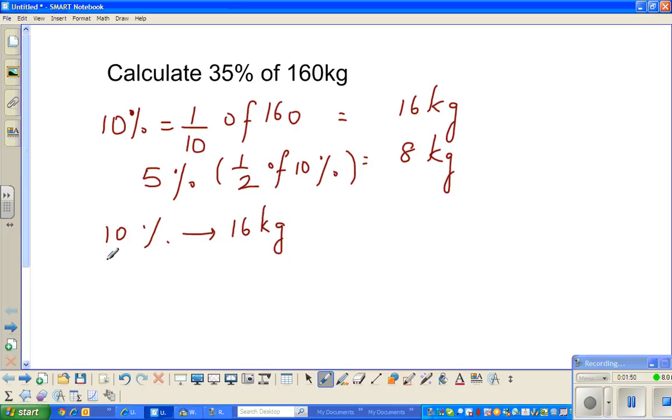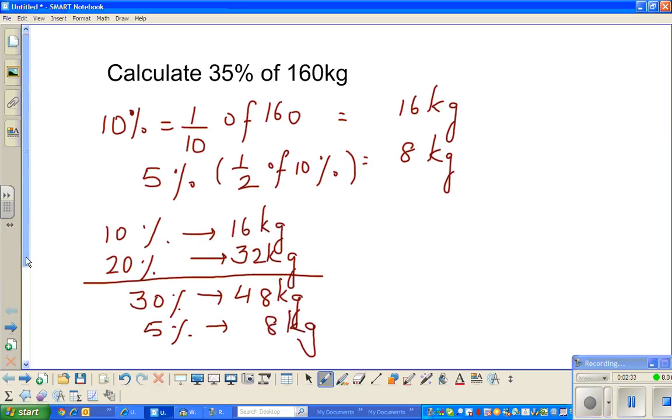Let me rewrite: 10% is 16 kg, so 20% is double of 10%, which is 32 kg. This tells me from 10% and 20%, I can write 30% is adding these two, which is 48 kg. So we're almost there. We now know 30% is 48.